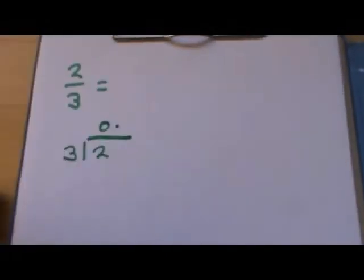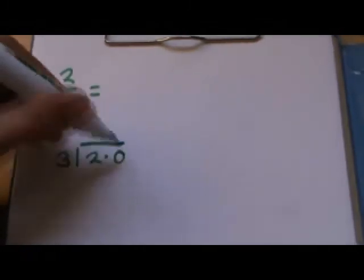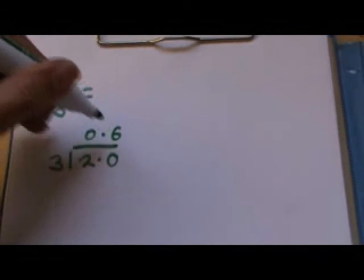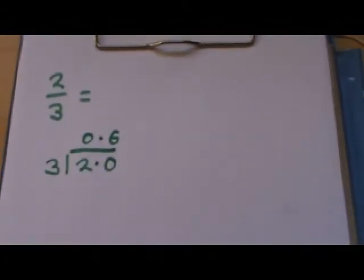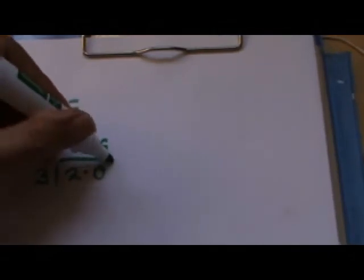Threes don't go into two. It's zero point something. Threes into 20 goes six. And because three sixes are 18, we've got a remainder of two.